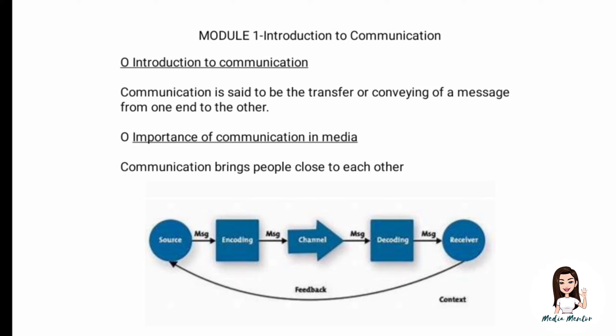The third important part is the basic process of communication. The first element is the source — the starting point of the communication process. The source will encode a message in his or her mind to convey it to the receiver, who is at the other end of the whole process.